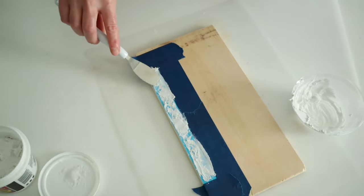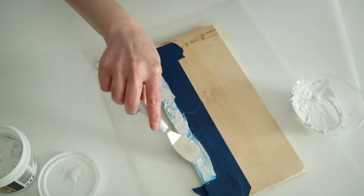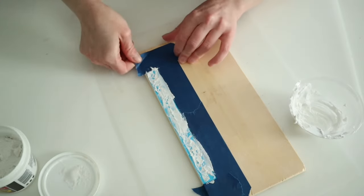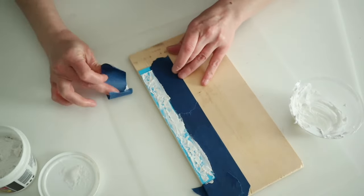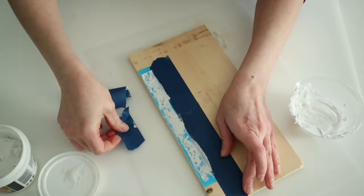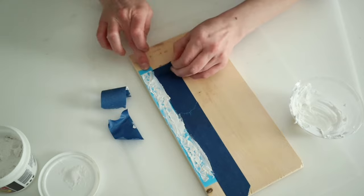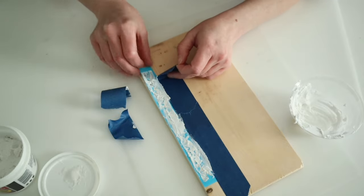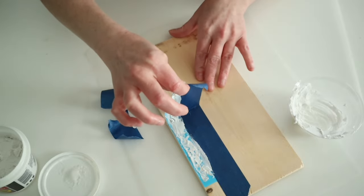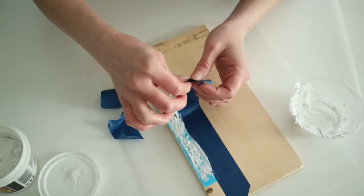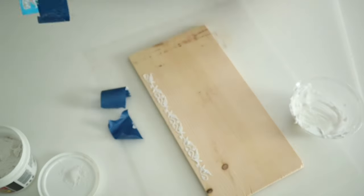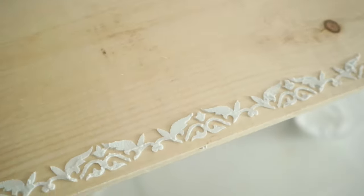That way, you're not getting any of this spackling where you don't want it. Once you have the stencil covered, you're going to go ahead and remove that painter's tape and very gently peel up the stencil. Then you will be left with this really pretty raised texture.